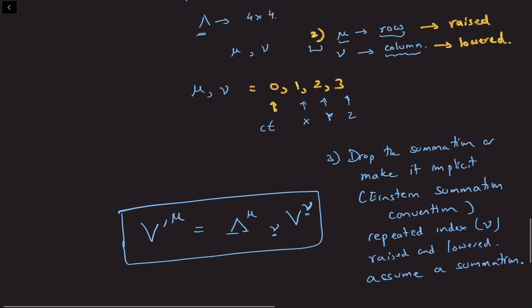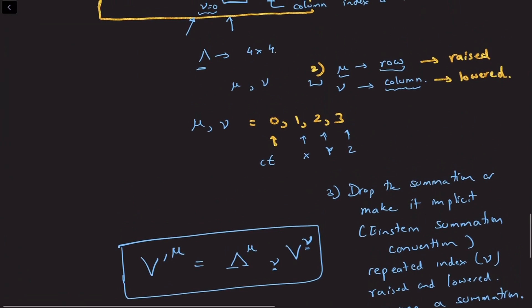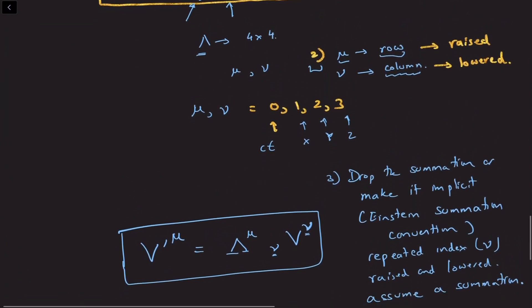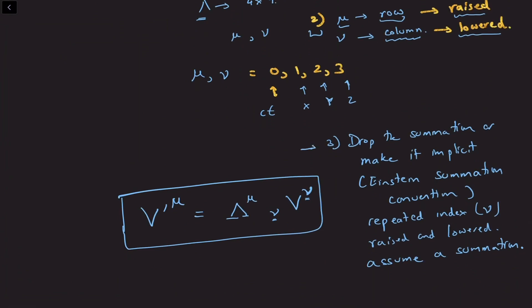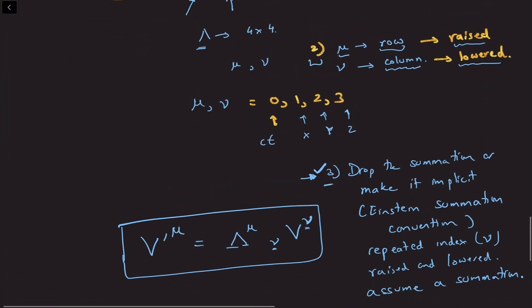We'll see that the second rule for raised and lowered indices — where we took row indices and raised them and column indices and lowered them — is going to be incompatible with law number three. So what we're going to do is take law number three as the correct notation convention, and we'll see what this implies for the generalization of the second law of raising row indices and lowering column indices.